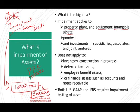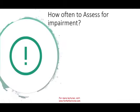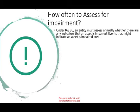Both US GAAP and IFRS require impairment testing of assets. US GAAP is different than IFRS, but nevertheless they both require it. Under IAS 36, which is the IFRS requirement, an entity must assess annually whether there are any indicators that an asset is impaired.